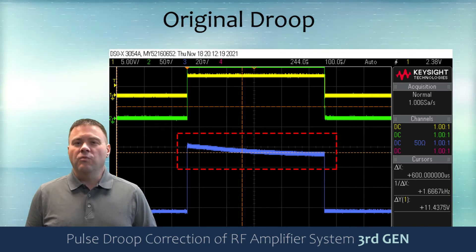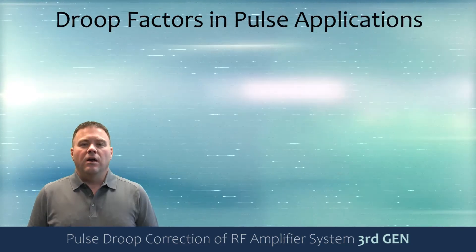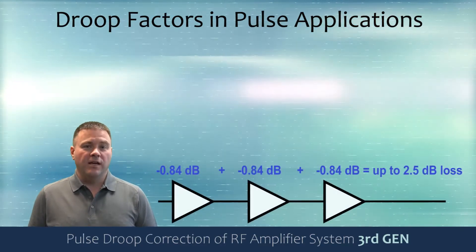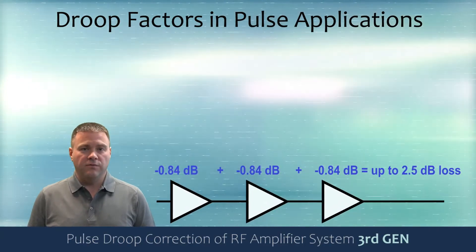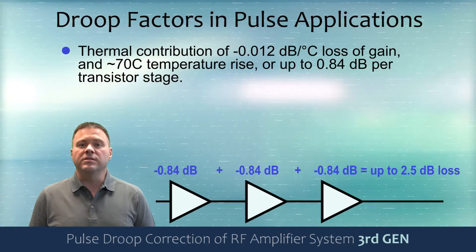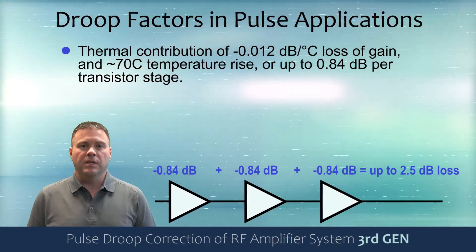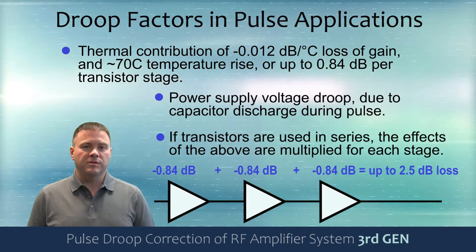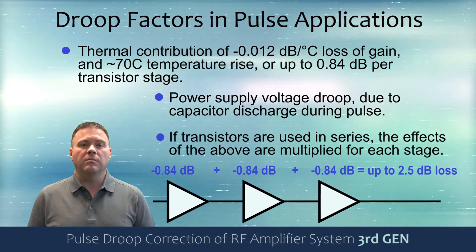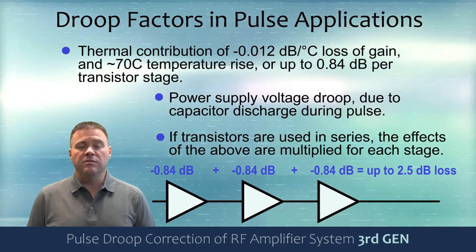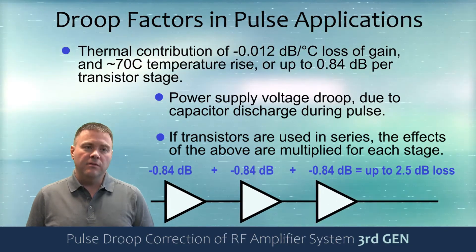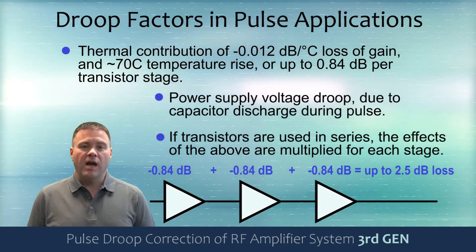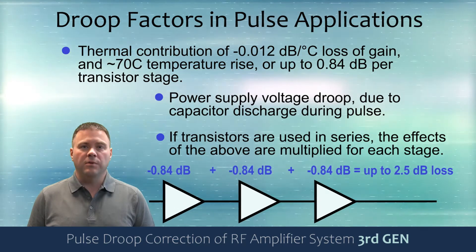Now let's take a look at what causes this droop in solid state transistors. RF droop has multiple contributing factors. The primary and most dominant contributing factor is the thermal response of the transistors used in each module. The transistors have a thermal response that reduces their output power by upwards of half a dB to 1 dB, depending upon how much their temperature rises over time and throughout the pulse.